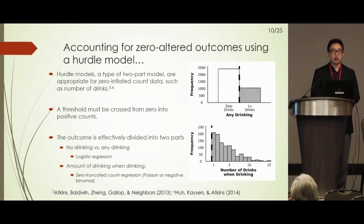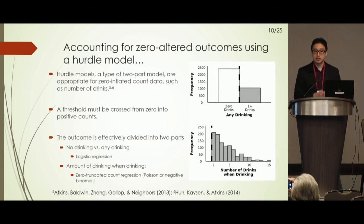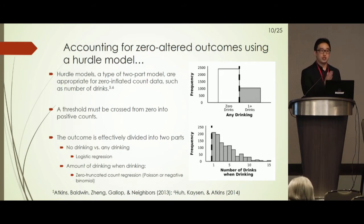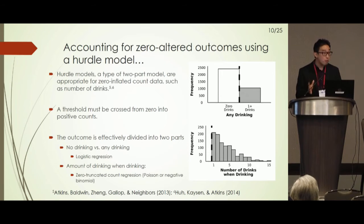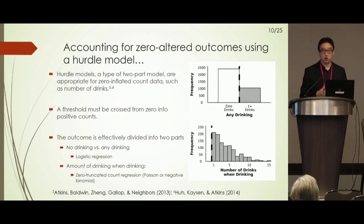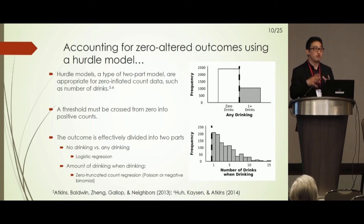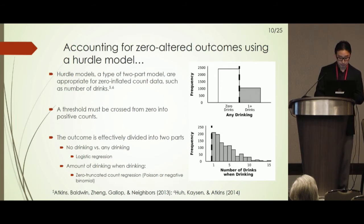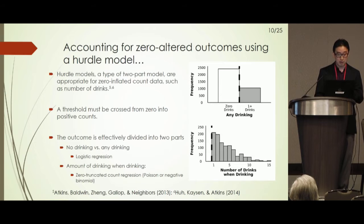There are different approaches for modeling this type of zero-altered data. One approach is what's known as a hurdle model — a type of two-part model where you break up your data into two pieces. The first piece is a binary indicator: zero meaning no drinking, and one meaning any level of drinking at or above one drink. The second part models the number of drinks among the subsample with positive values. The naming of the hurdle is not an accident — it refers to the metaphor of crossing a hurdle from not drinking into the decision to drink, and then once that decision is made, how much are you drinking. The first part can be modeled in a logistic regression, and the amount when drinking in a zero-truncated count model, since it excludes zero.